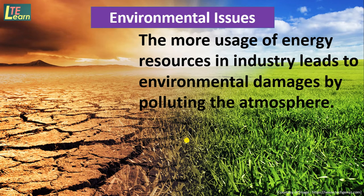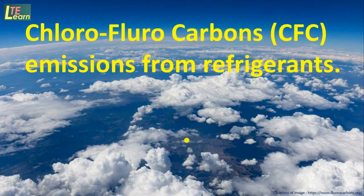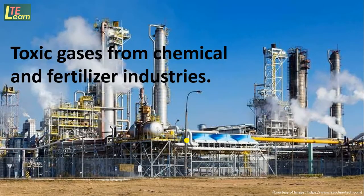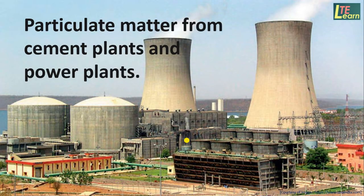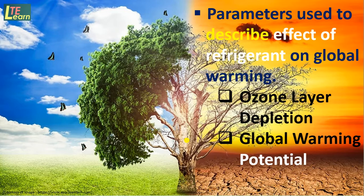The more usage of energy resources in industry leads to environmental damage by polluting the atmosphere. For example, air pollution due to sulfur dioxide, nitrous oxide, and carbon monoxide emissions from boilers and furnaces; chlorofluorocarbon emissions from refrigerants; toxic gases from chemical and fertilizer industries; and particulate matter from cement plants and thermal power plants. The effect of refrigerants on global warming is described using parameters: ozone layer depletion and global warming potential.